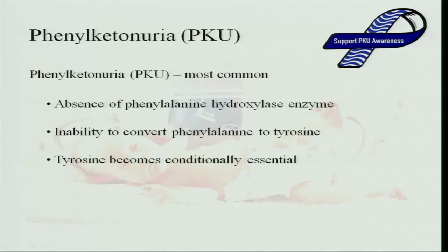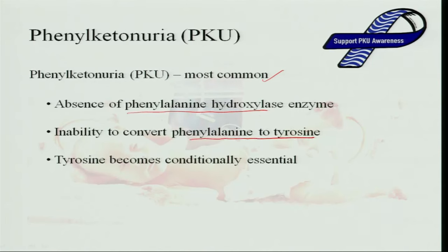Phenylketonuria is the most common metabolic disorder. The absence of the phenylalanine hydroxylase enzyme in an infant causes phenylketonuria. This enzyme is absent and it does not convert phenylalanine to tyrosine, so tyrosine becomes a conditionally essential amino acid for the body, which is not available if phenylketonuria is present.